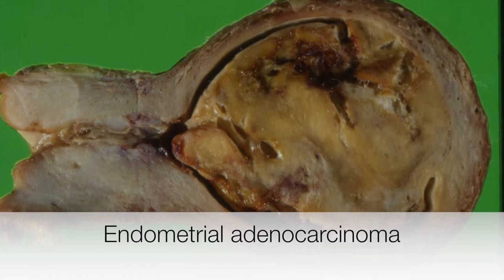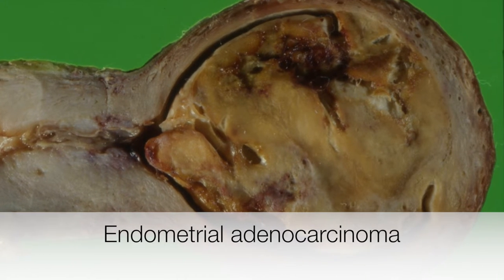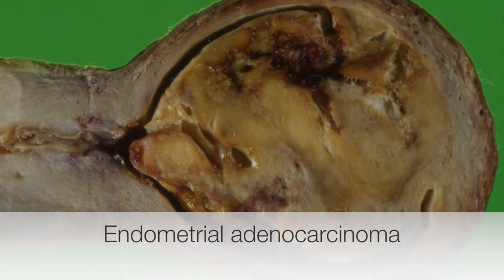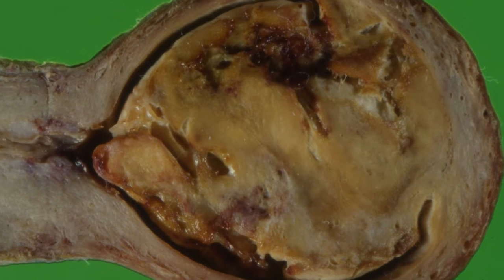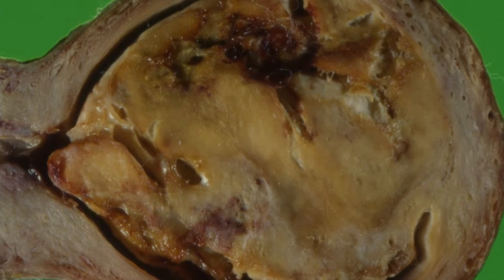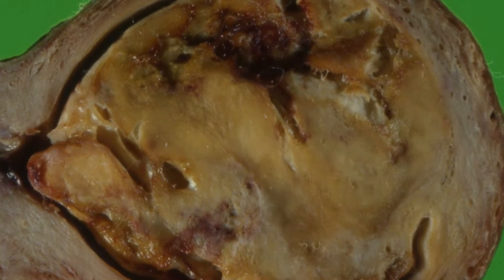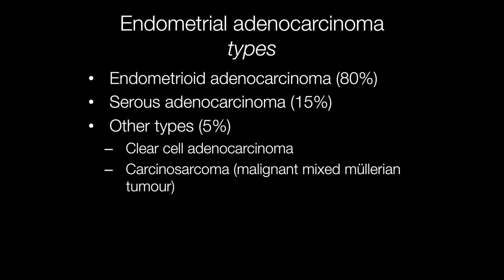This large mass distending the endometrial cavity is an example of an endometrial adenocarcinoma. By far the most common type is the endometrioid adenocarcinoma, so called because of the close resemblance to endometrium.